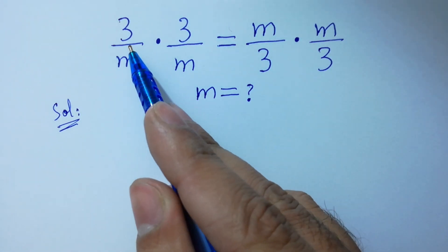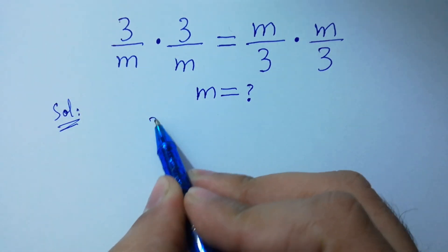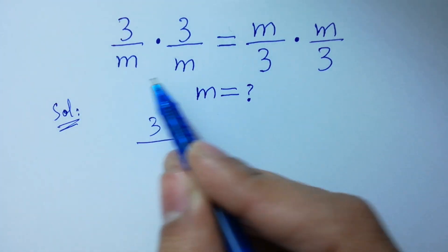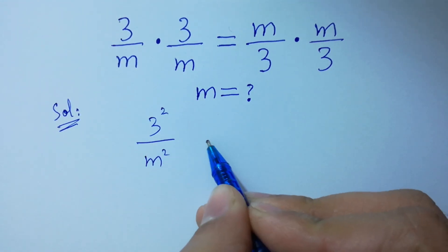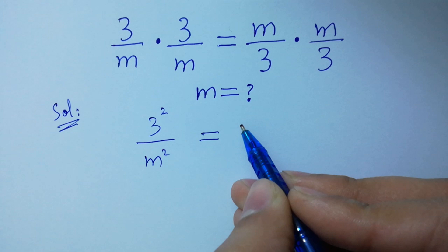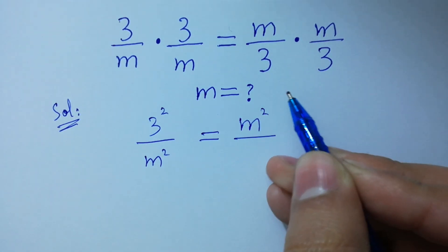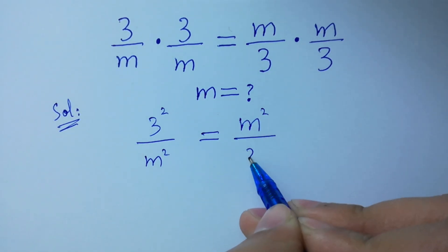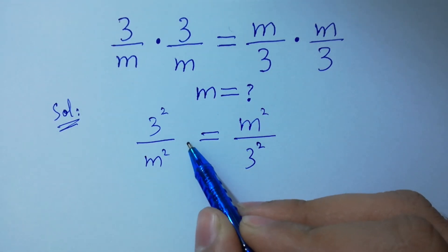You can see 3 times 3 is 3 squared, and m times m is m squared, equal to m squared over 3 squared. By cross multiplication,